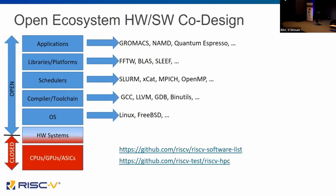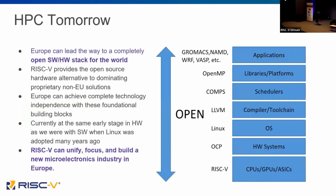RISC-V is a language and mechanism to give us the capability to do both software and hardware co-design. What that looks like in the HPC system of tomorrow is this combination of applications all the way down to CPUs, GPUs, and ASICs using RISC-V, which allows us to build that overall ecosystem — something that was very difficult to do before the advent of RISC-V.